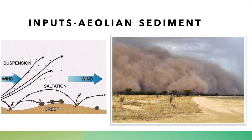Another large input is aeolian sediment. This is sediment that is carried by the wind, and it is very dominant in areas that are quite arid and dry. The wind will basically suspend a lot of particles inside of it, and the larger particles will bounce along the bottom — we call this saltation. You can see this quite clearly in sandstorms, or even just in dust particles that are picked up by the wind.